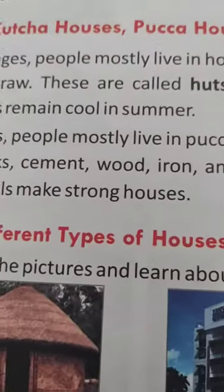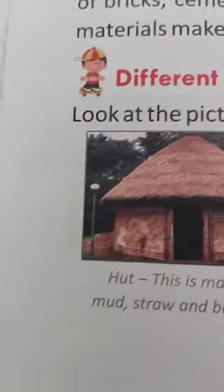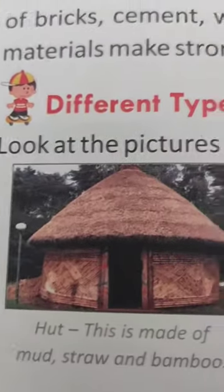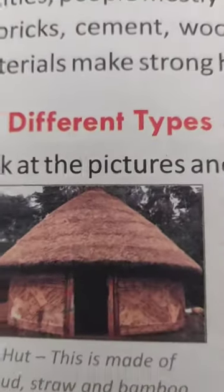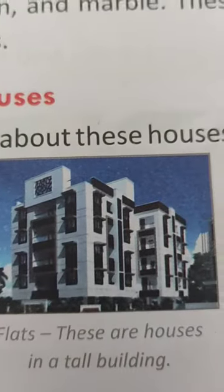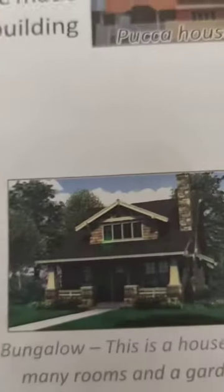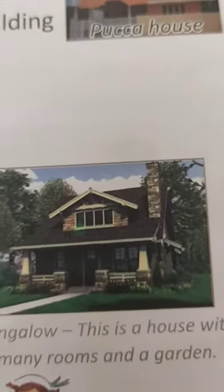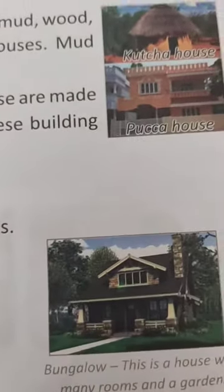Different types of houses are: huts, flats and bungalows. A hut is made up of mud, straw and bamboos. Flats are houses in tall buildings. And bungalows — a house with many rooms and a garden.